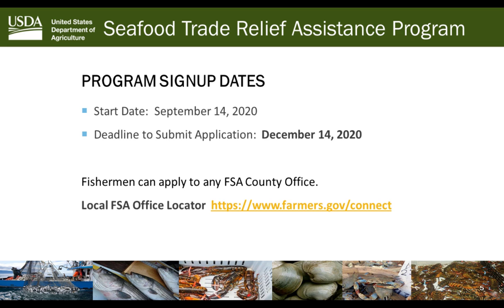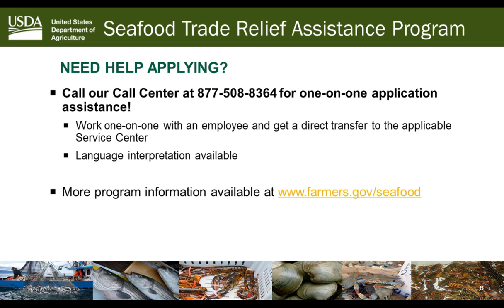Even if a fisherman holds a federal or state license in another state — for example, someone who resides in Idaho during the off-season but holds a state permit or federal license issued by Alaska — they could apply at another county office. To locate your nearest office, visit farmers.gov/connect, where an office locator will tell you which USDA service center serves your area.